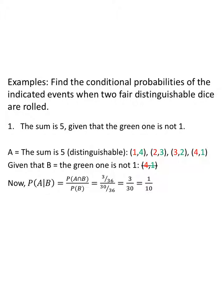Now, what does that mean in an example problem — when we don't have just numbers? Let's find the conditional probabilities when two fair distinguishable dice are rolled. The sum is five, given that the green one is not the number one. So the sum is five is our event A. Since the dice are distinguishable, we write down every possible outcome in the set: (1,4), (2,3), (3,2), (4,1).